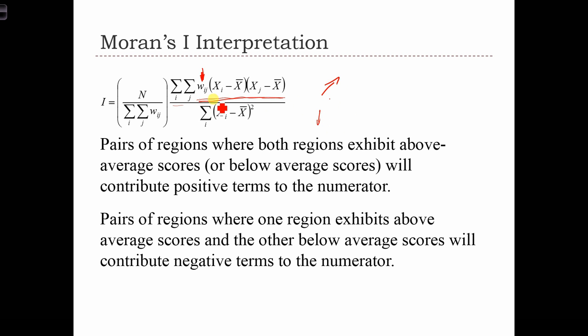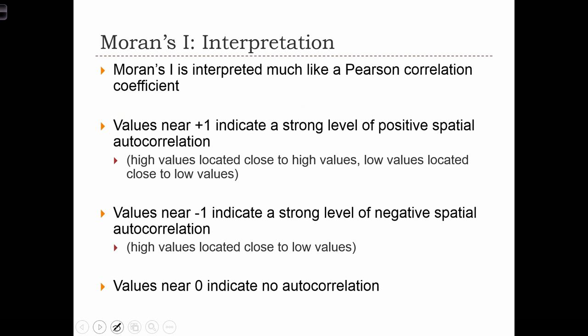Everything else in this equation doesn't depend on spatial autocorrelation at all. So this first term in this denominator, those are just terms there to standardize the equation. The only thing that matters really is what's happening in this sum of cross products.